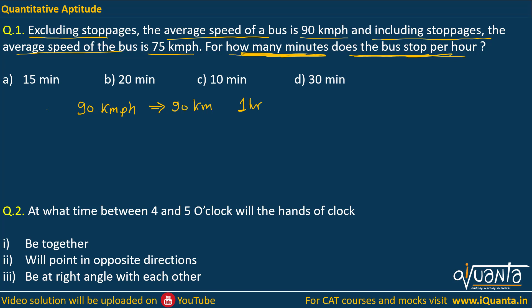But when there are stoppages, its average speed is becoming 75 kilometers per hour, so definitely it would be stopping somewhere. That's why the average speed is lesser in this case. So when it is covering 75 kilometers, let us see how many hours is it taking.